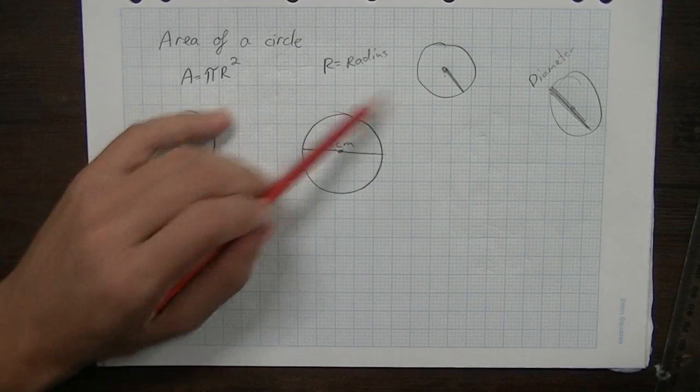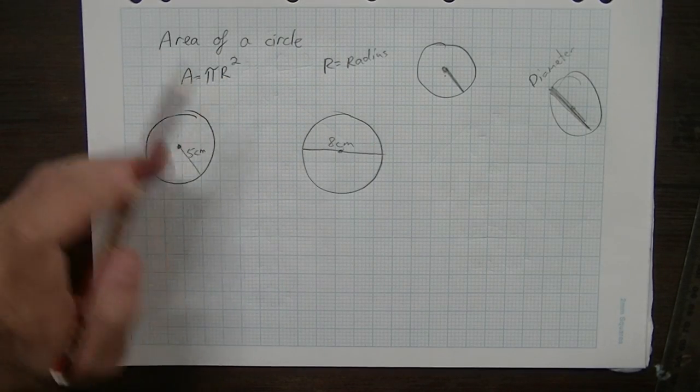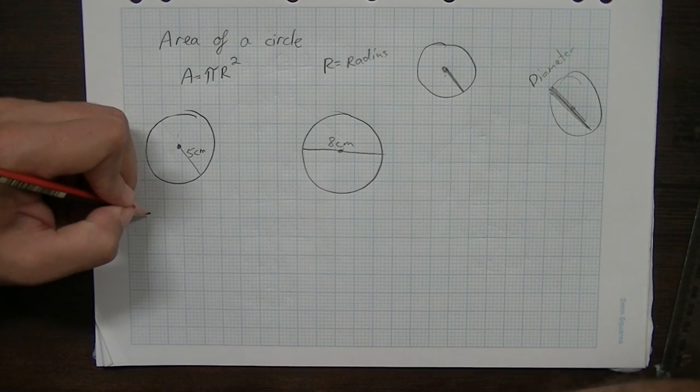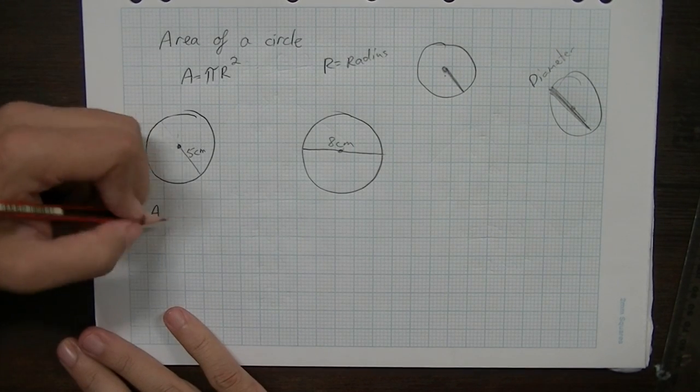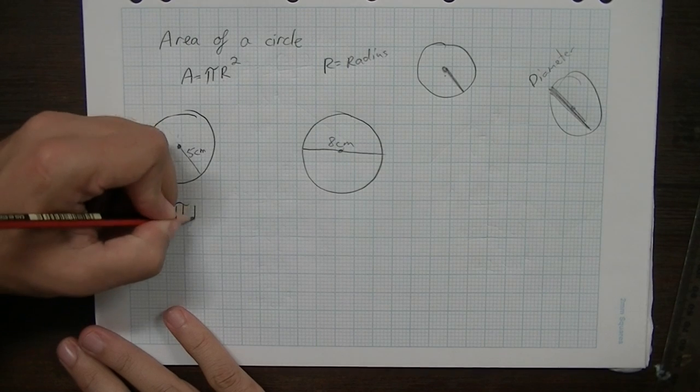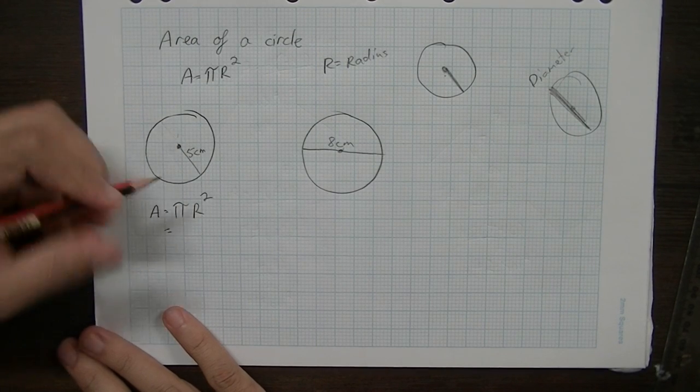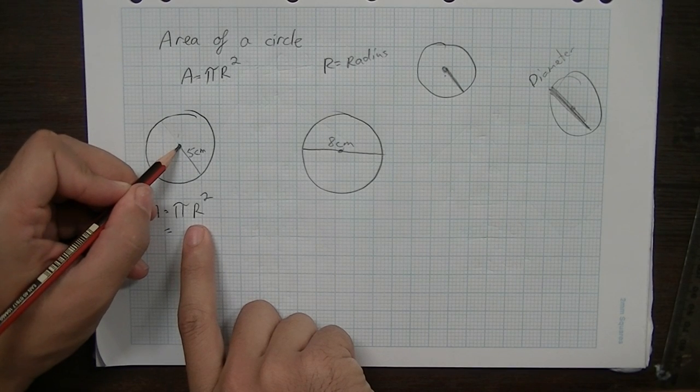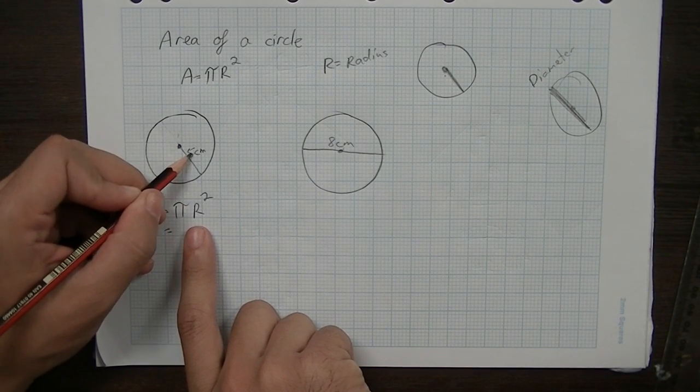Okay, so looking at pi r squared. Fairly straightforward, let's take a look at it. The area of this circle, first of all, we use our formula pi r squared. You can see that our r is from the centre to the edge. That's 5 centimetres here.